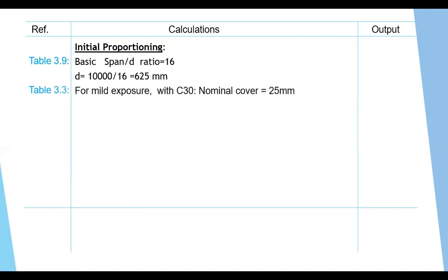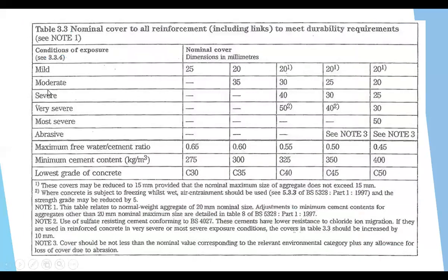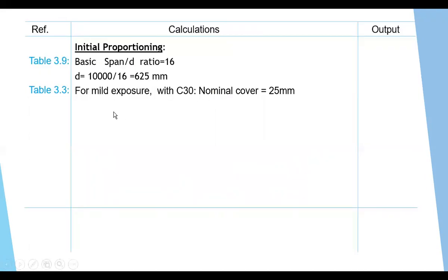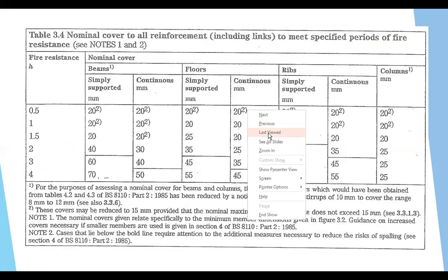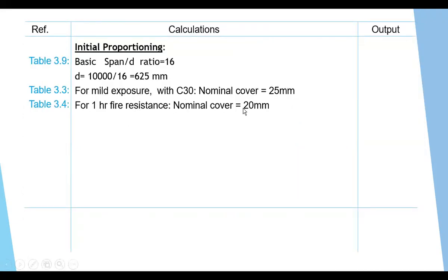Once you get D, you have to get the cover. From table 3.3 for durability — mild exposure with C30 concrete — the cover is 25 mm. Then checking table 3.4 for one hour fire resistance on a simply supported beam gives a cover of 20 mm. We take the larger value, so the cover is 25 mm.